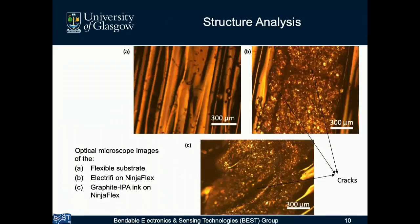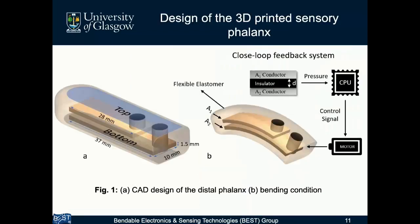Structural analysis was also conducted: microscopic images of the flexible substrate show that when you bend the structure, cracks can appear. If the structure is on the outer surface, bending of the hand may cause cracks. However, if it is inside the structure between two rigid joints where there is no movement, it will remain fine. One of the requirements for the hand is to have touch sensors, and there is a lot of research about electronic skin.